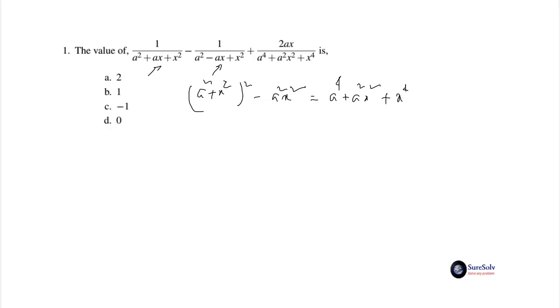What is the numerator of the result? It will be just -2ax. So the result will be -2ax divided by a⁴ + a²x² + x⁴.